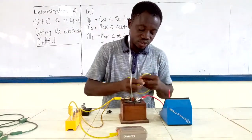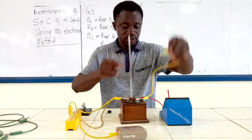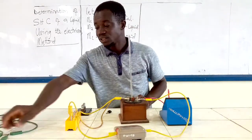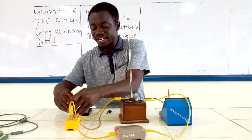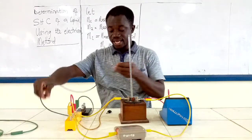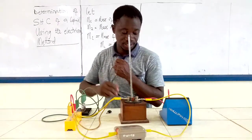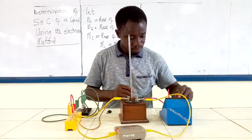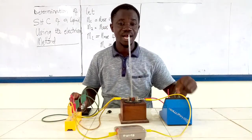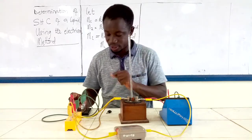Remember that a voltmeter is always connected in parallel to a load, not in series, because it has a very large resistance. When we connect a voltmeter in series, it will prevent the current from flowing through the circuit. So we always connect a voltmeter in parallel so that it draws virtually very small current from the circuit. The ammeter is always connected in series because it has a very small resistance, which allows all the current to flow through it and through the load.